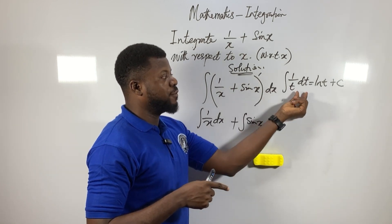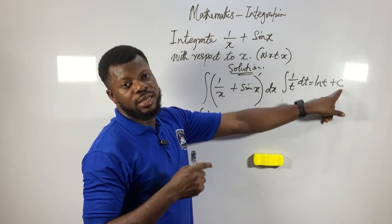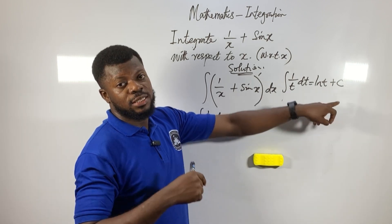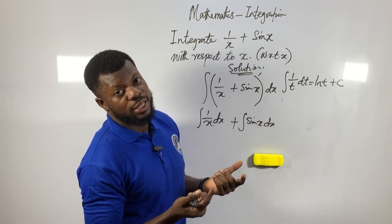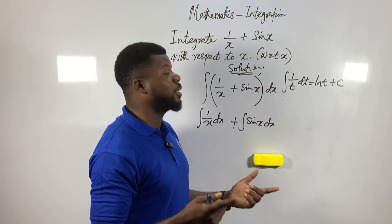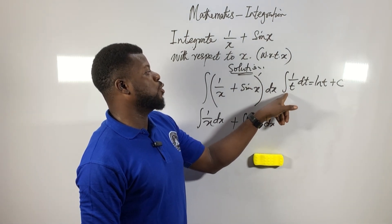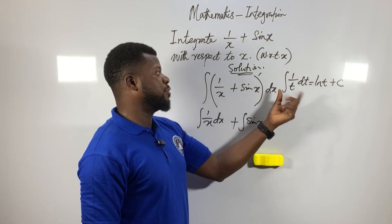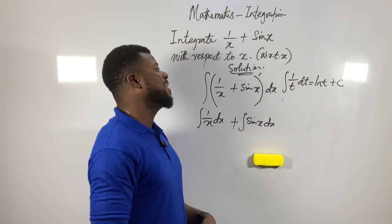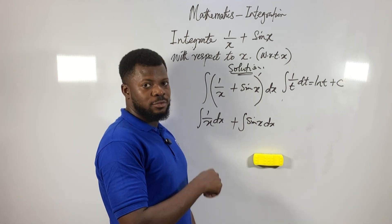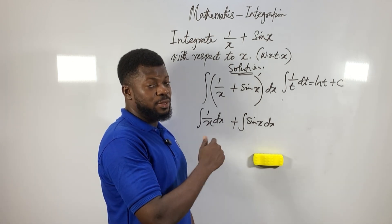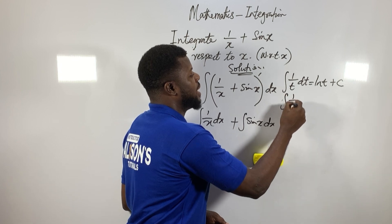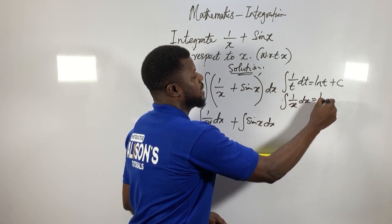Anytime you integrate a function and finish, you must put plus constant C. Whether you use capital A, k, or c, it doesn't matter — just know that the constant must be there. Except when they give you definite integrals with upper and lower limits — then you substitute and the constant cancels out. So for our problem, the integral of (1/x) with respect to x equals ln(x) + C.